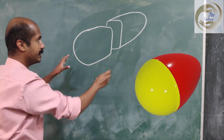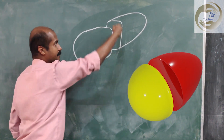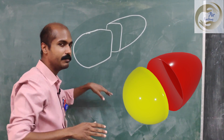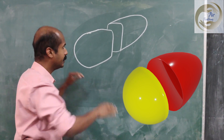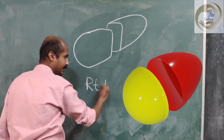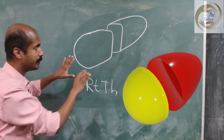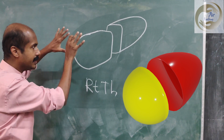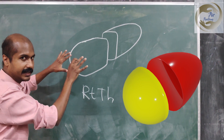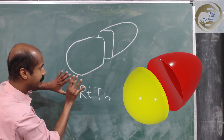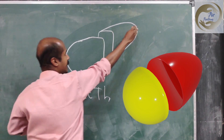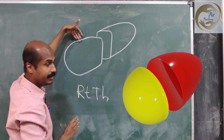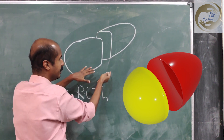The most important critical point to understand this diagram is the orientation — the axis. This is the right thalamus, and you are looking at it from the right lateral, posterior, and slightly above. So in this view: this is anterior, this is posterior, this is the lateral side, that is the medial side, this is superior, and this is inferior.